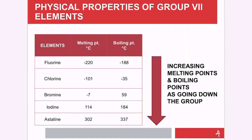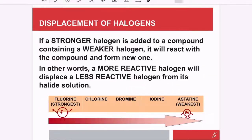Next is the melting and boiling point, which is under physical properties. From fluorine to astatine, the melting and boiling points change from negative values and gradually become more positive. So the melting and boiling points gradually increase as you go down the group.